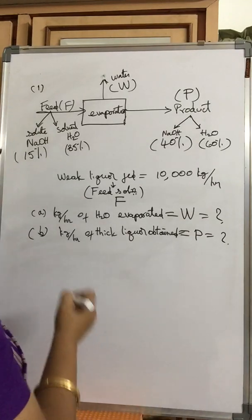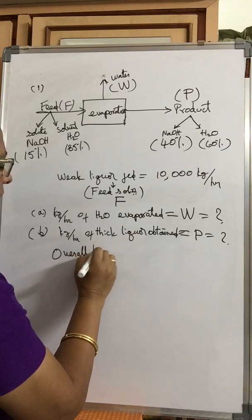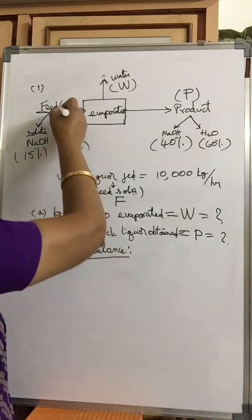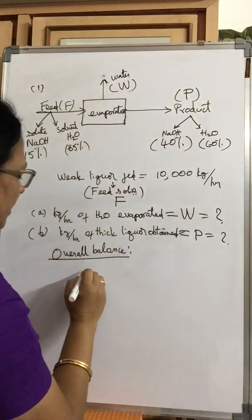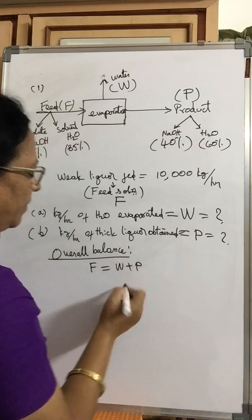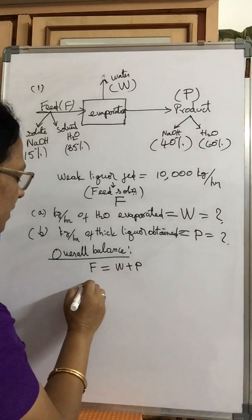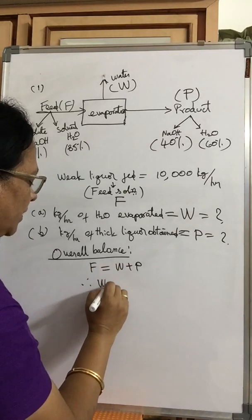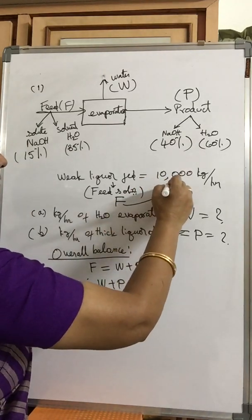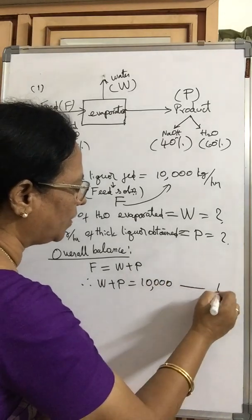Shall we write the material balance? Overall balance: F = W + P. We don't know W or P individually — those are the unknowns. Therefore, W + P = F = 10,000. Let this be Equation 1.